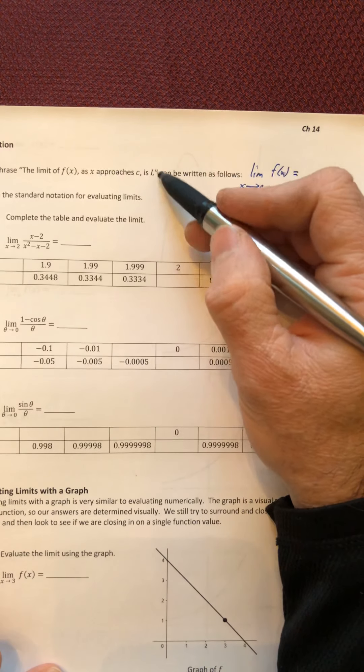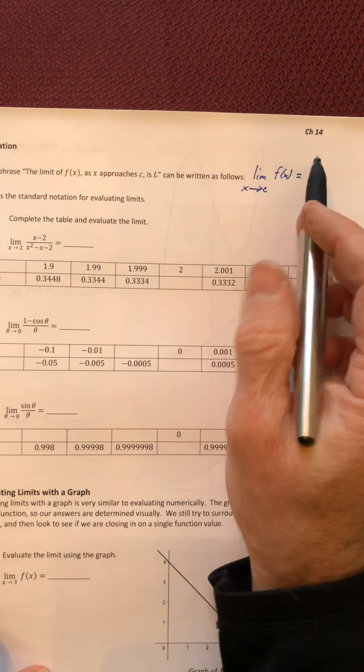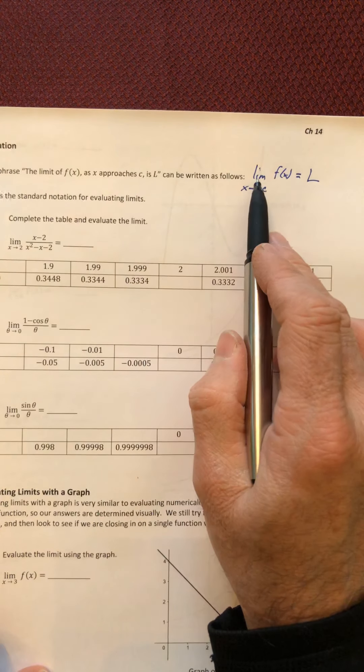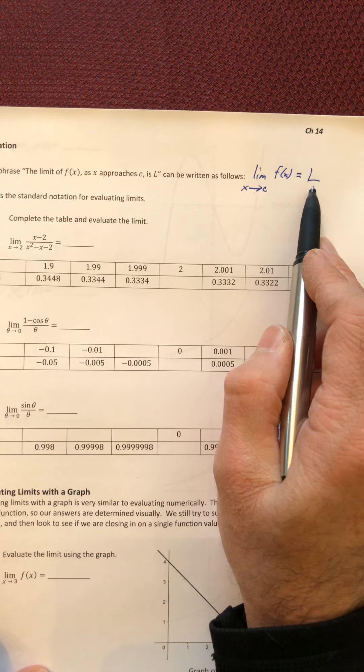This turns into equals, and the L is L. So when you see this notation, that's what it's saying: the limit of f(X) as X approaches C is L.